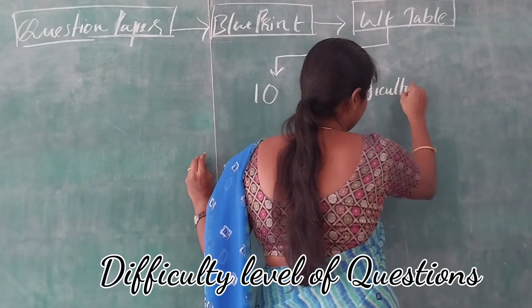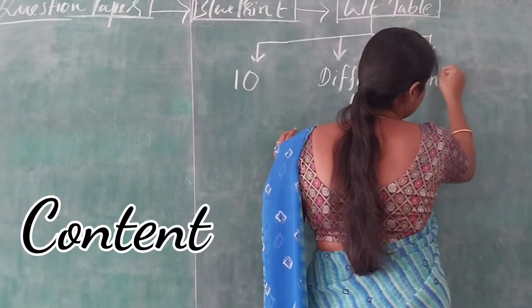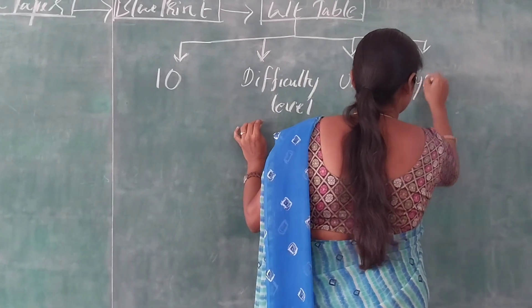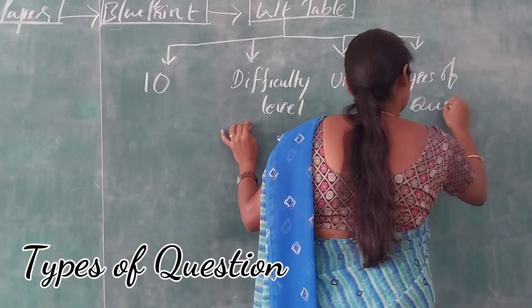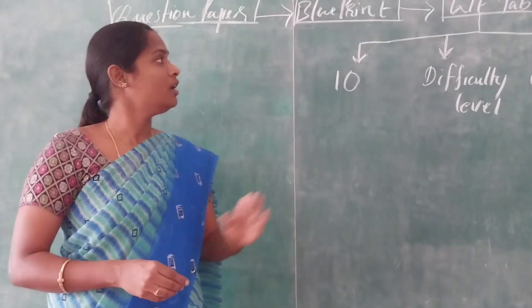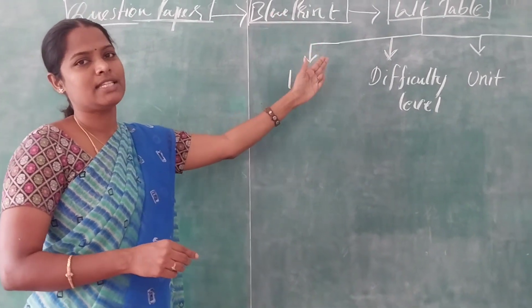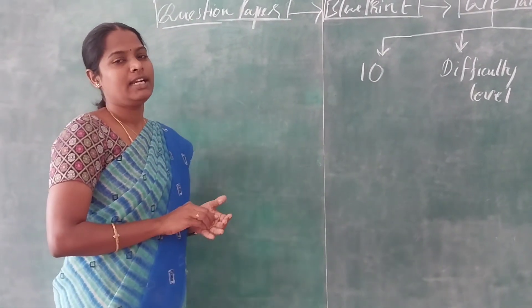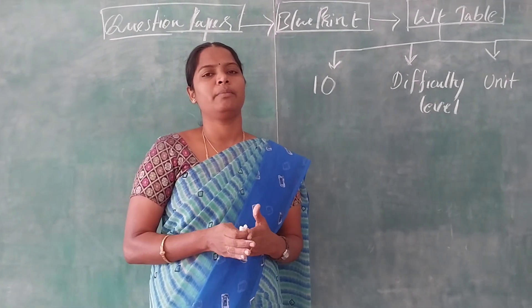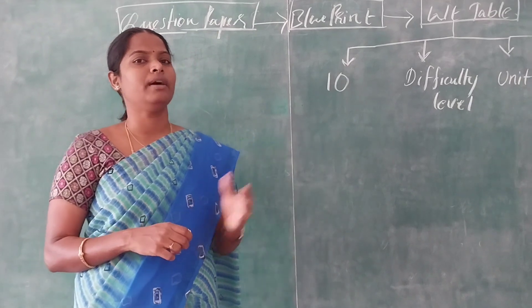The second variable is the difficulty level of the question paper, the third variable is for unique syllables, and the fourth variable we will discuss as well. In the initial stage we should prepare four variables, and on the basis of these variables we prepare a blueprint. On the basis of the blueprint, teachers are supposed to prepare question papers — whether it is a formative test or a summative test — the teacher should know how to prepare a standardized question paper.